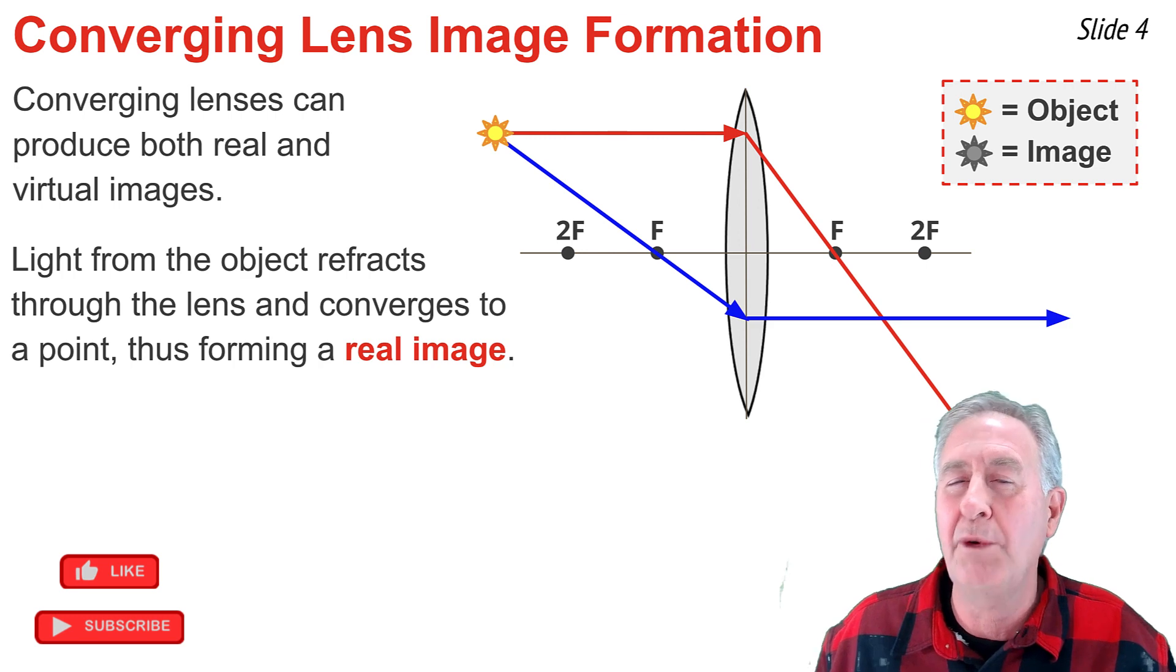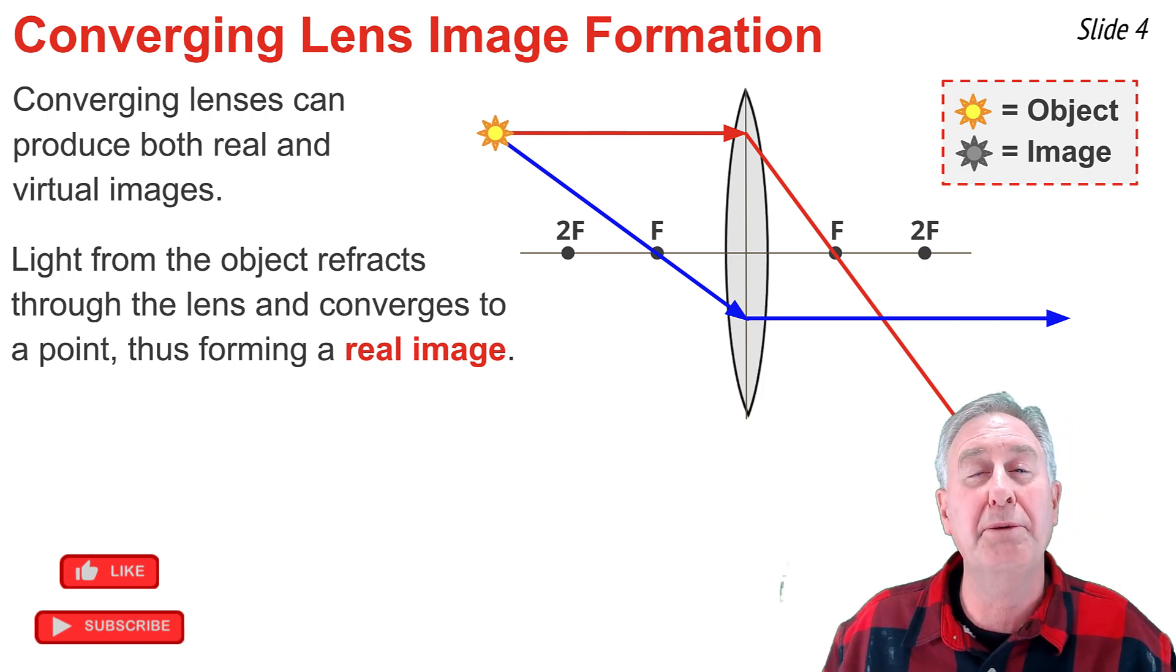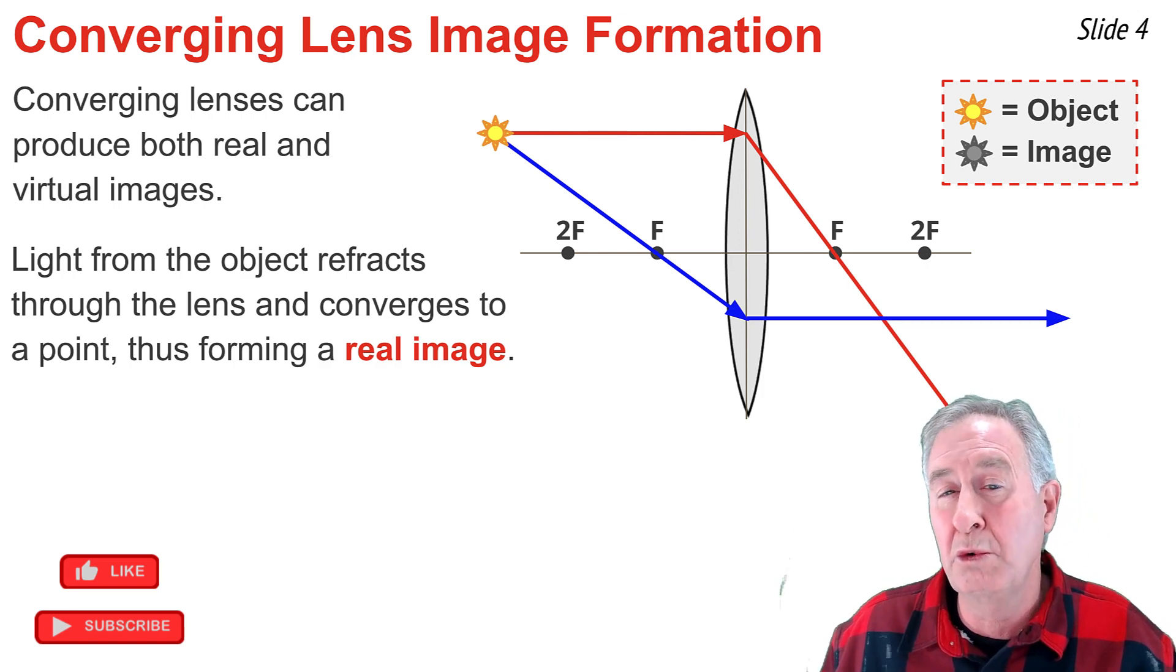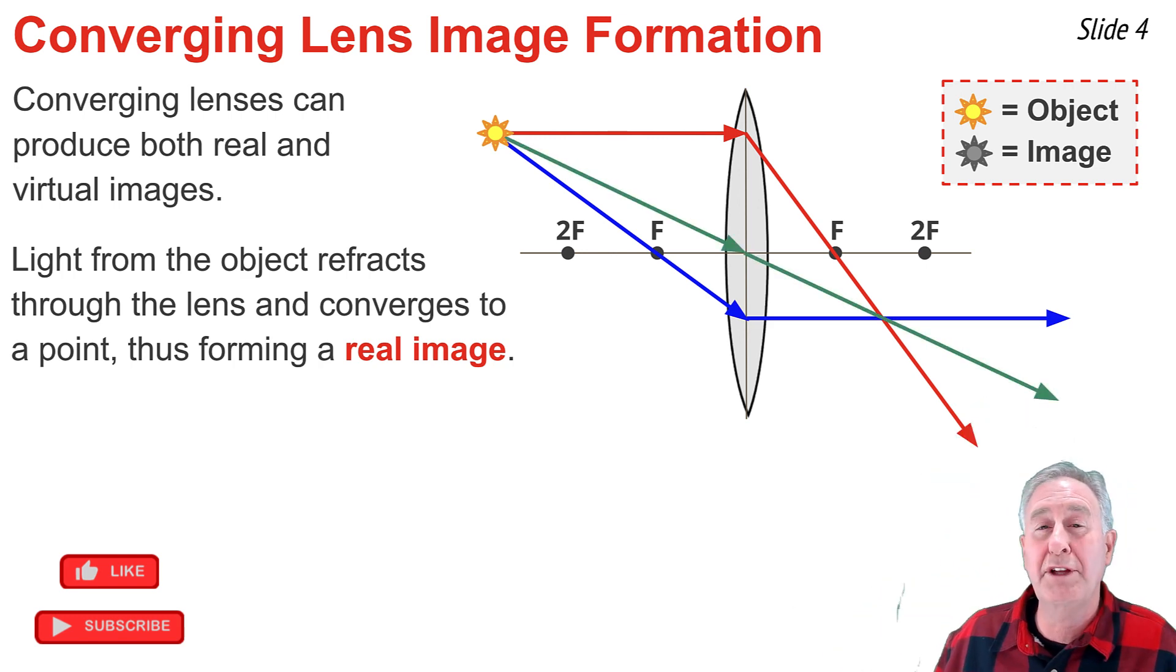If I know something about how a lens refracts light, I could predict the location of this particular image. For instance, this red ray traveling parallel to the principal axis, and this blue ray passing through the focal point, and even this green ray traveling through the exact center of the lens will refract as shown, and will intersect at a point known as the image point.